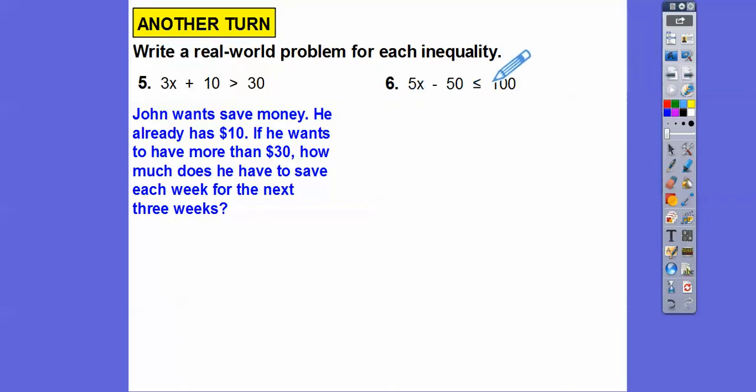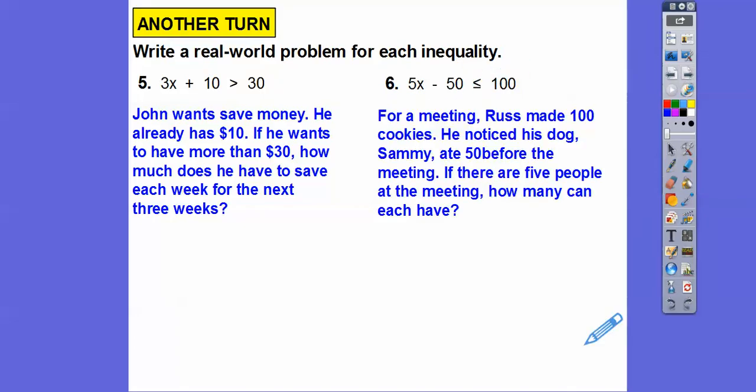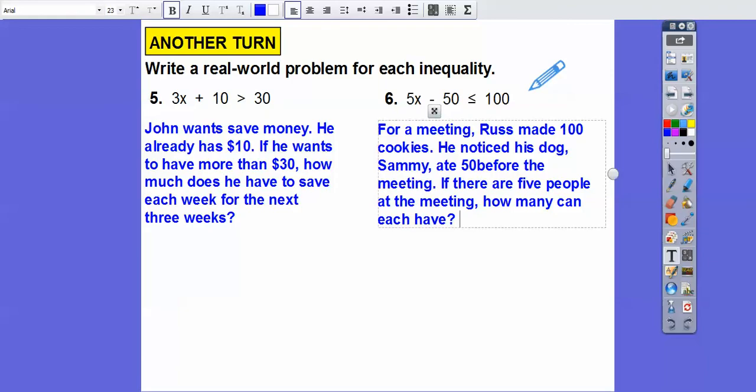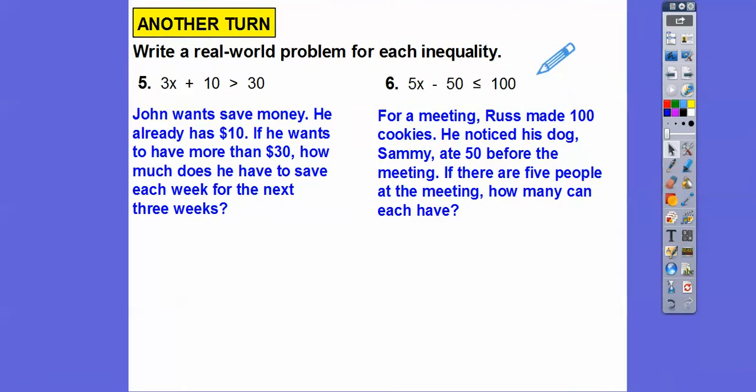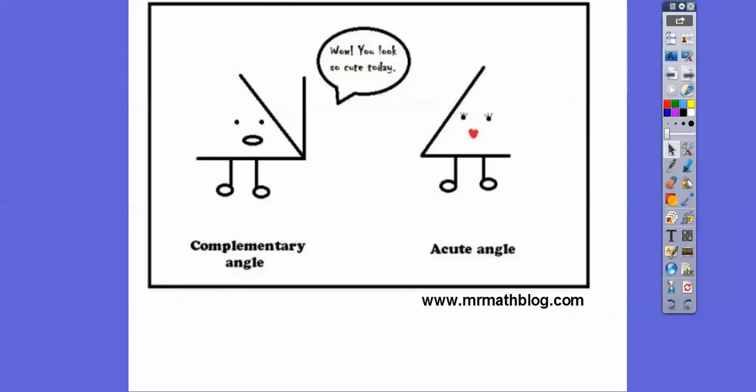Something over here. So I have something like this. For a meeting, Russ made 100 cookies. He noticed his dog Sammy ate 50 cookies. Golly, Sammy. Not bad girl, Sammy. 50 cookies before the meeting. If there are five people at the meeting, how many can each person have? So here's 100 cookies that Russ made, and Sammy ate 50 before the meeting, so there's 50 left. How many can each person have, so they don't have to eat them all, but if they're going to eat them on average, it would be that equation right there. I hope that makes sense, and take care. Thank you.